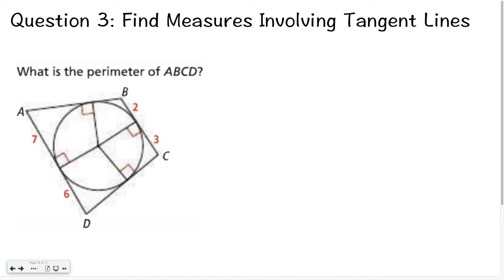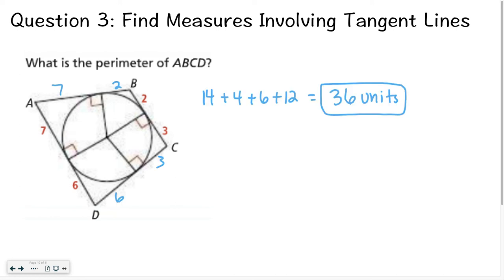Question three: what would the perimeter of ABCD be? Hopefully you remembered that tangent lines to a circle that meet at the same endpoint are congruent to each other. So I can fill in all the missing measures using those congruent pairs: 7 plus 7, plus 2 plus 2, plus 3 plus 3, plus 6 plus 6. Adding all of those together, the perimeter equals 36 units.